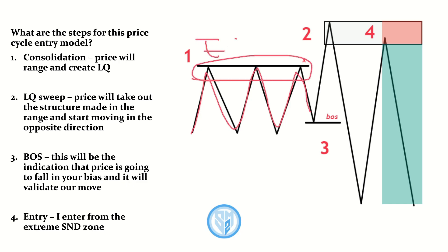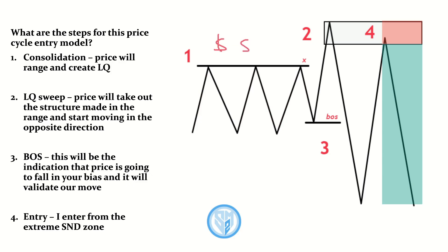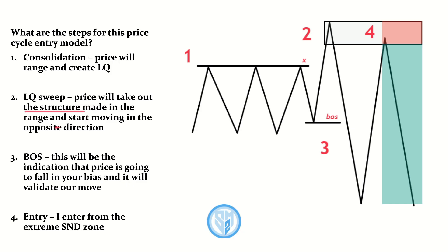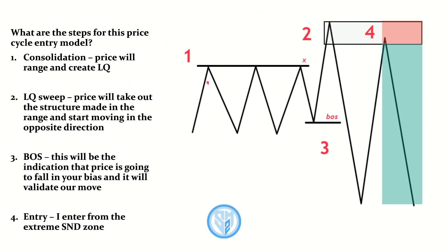In step one, all I'm looking for is price to consolidate into a tight range and create liquidity. Here we can see liquidity built up to the topside in the form of relative equal highs. We know price is eventually going to come out and sweep this liquidity, which takes us on to step two: the liquidity sweep.